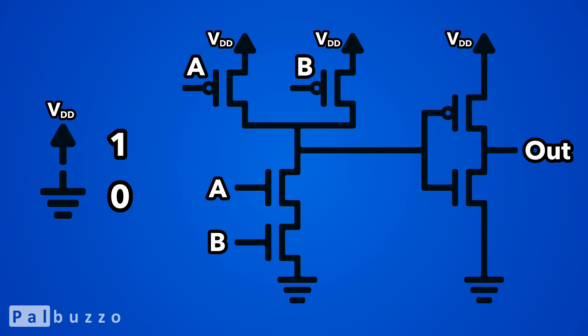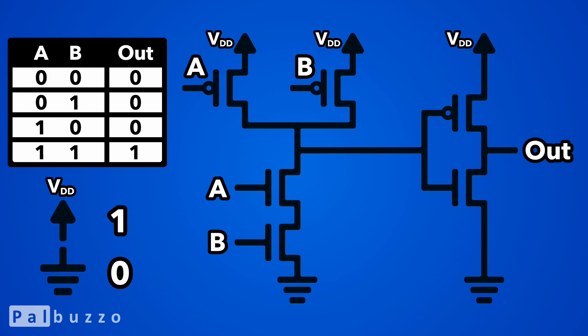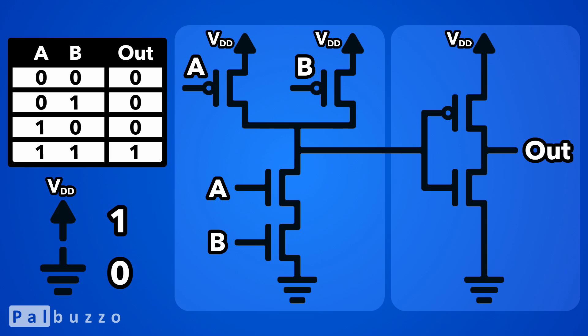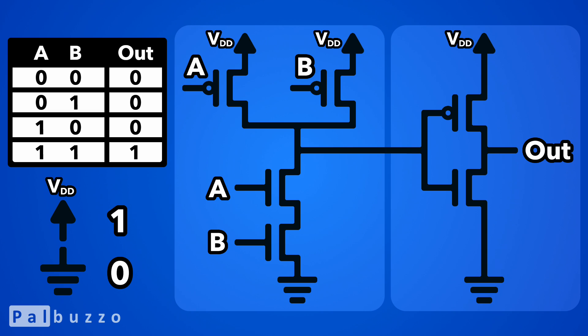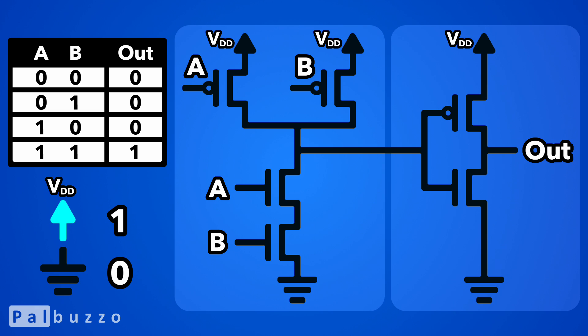Let's see how this design matches our truth table. For each entry, it will be helpful to analyze this design in two stages, with the intermediate output of the first stage being the input to the second stage.